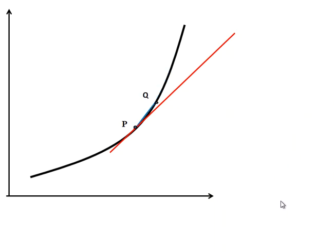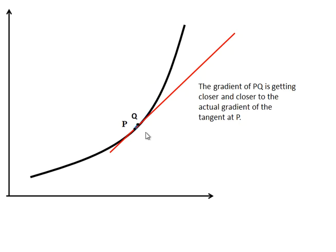And the answer is to move Q closer and closer to P. Like this. And we can see that the gradient of PQ is getting closer and closer to the actual gradient of the tangent at P. Now, we do this process using algebra.